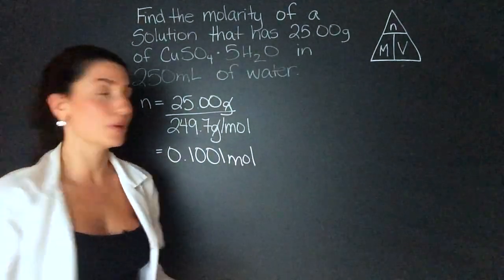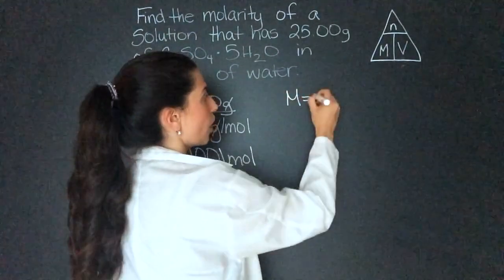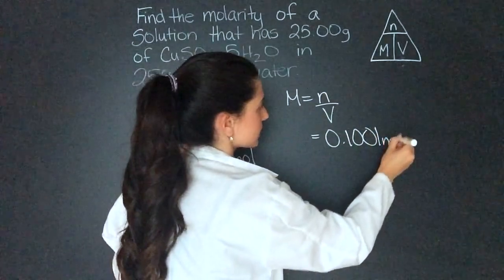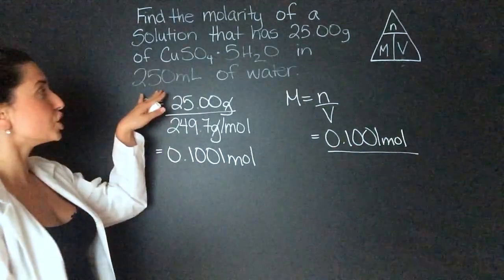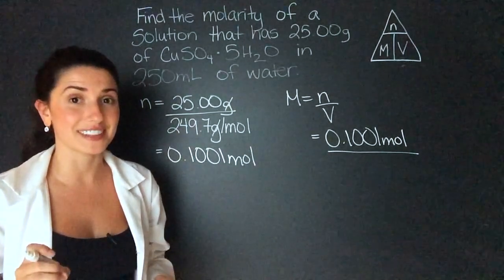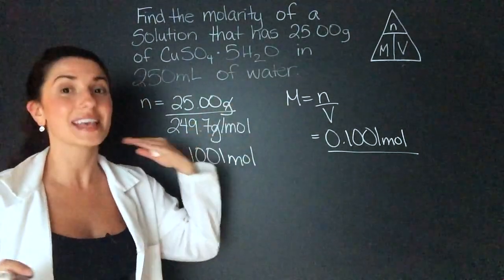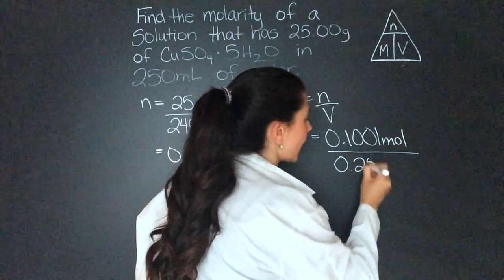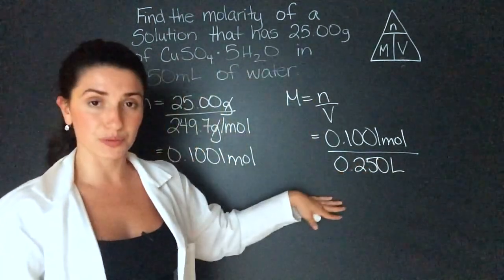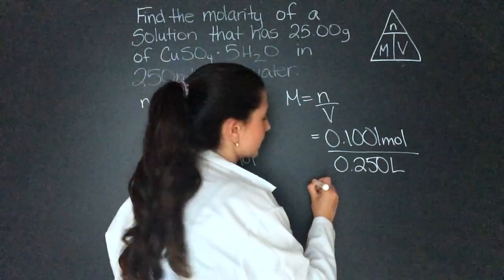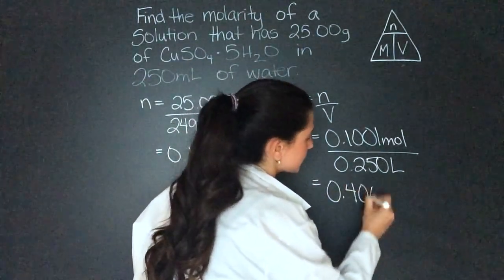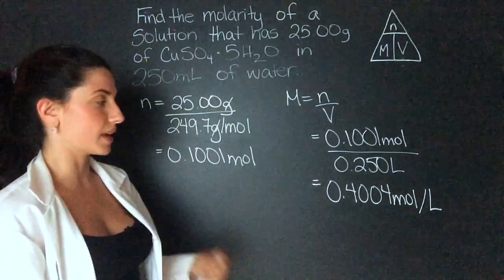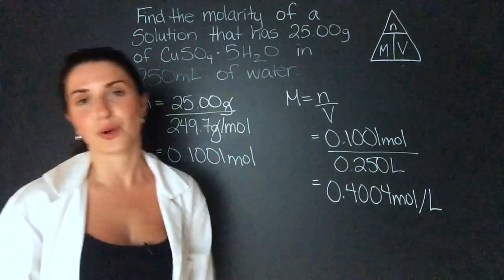You'll notice the grams cancel out and we're left with moles. So now we can go right to molarity. Molarity is going to equal moles divided by volume. So let's do 0.1001 moles divided by 250 milliliters. But we have to convert that to liters. Remember, molarity is always the moles of solute per liter of solution. So that equals 0.250 liters. And remember, if you need to review unit conversions, watch my other lesson. That equals 0.4004 moles per liter. Now, if they wanted only three significant figures, I would put 0.400 moles per liter.